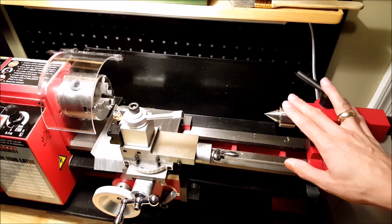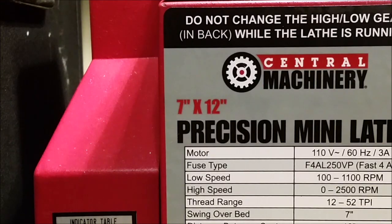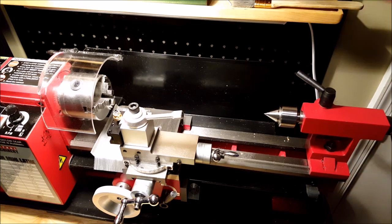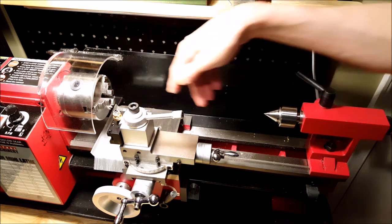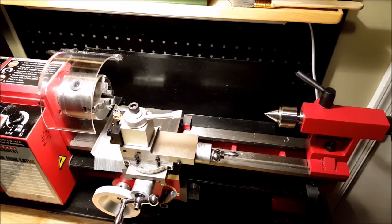Hey folks! This is a 7x12 lathe, which means theoretically the size of what you can turn between the chuck and the tailstock is 12 inches.